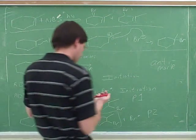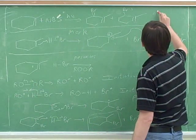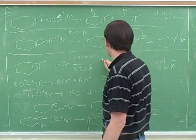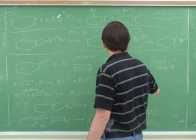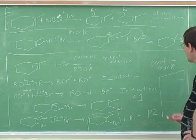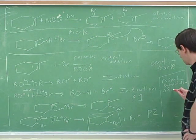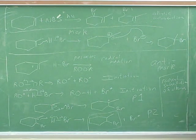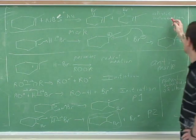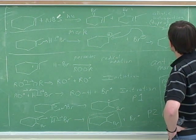So, you learned allylic halogenation. You learned radical addition. Radical substitution. And you learned radical substitution of alkanes. And allylic halogenation is actually also a radical substitution. But it's a radical substitution where there's an alkene, so this is a type of radical substitution.